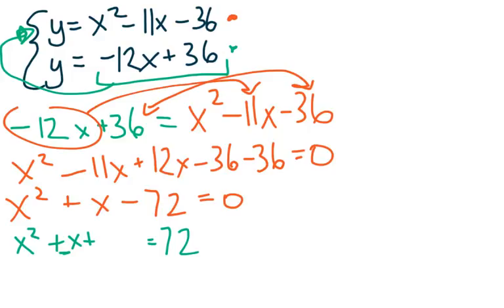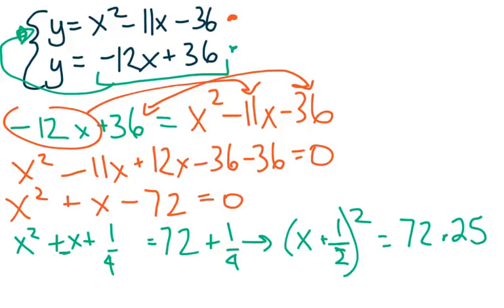And b, which is 1, over 2 is 1 half, and square that. That gives us 1 fourth, and we'll add 1 fourth over here as well. And then we can turn this into a squared binomial, which would be x plus 1 half squared equals 72 and a quarter, which I'll write as 72.25 just to make calculations easier for now.